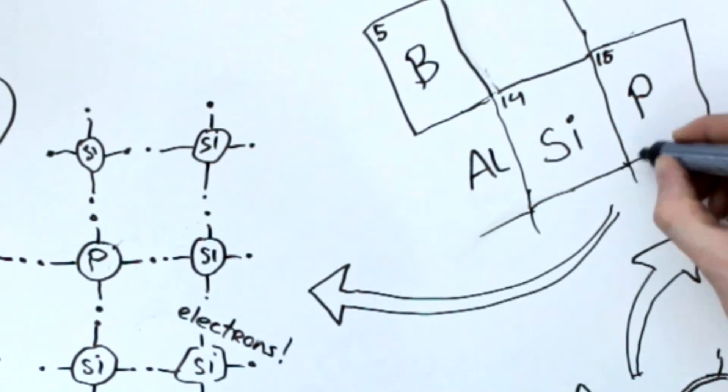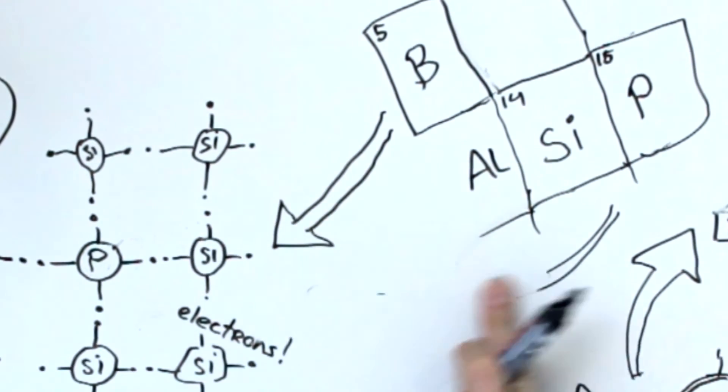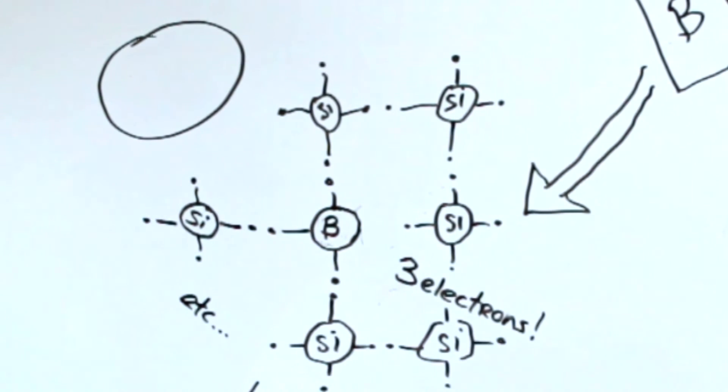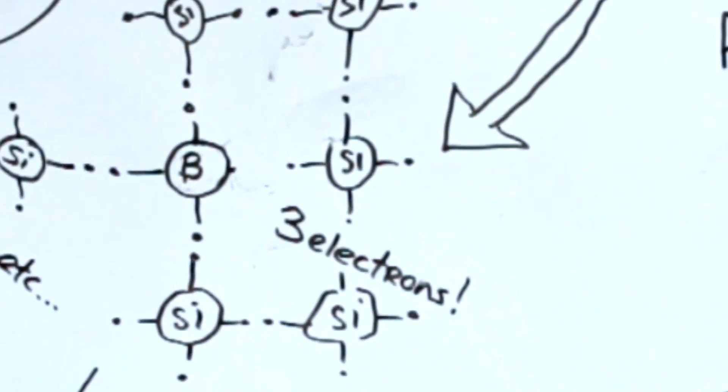We can also create a positive semiconductor by doping with a material containing less electrons than silicon. This is usually done with boron. Boron has just three electrons instead of four. This causes the sheet to have holes in it where an electron wants to be. The resulting material is a so-called P-type positive semiconductor.